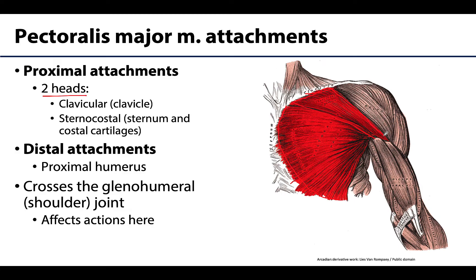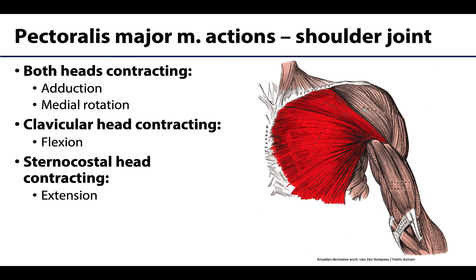Looking at these attachment points, you can see that the pectoralis major muscle will cross the glenohumeral joint. Since it crosses the glenohumeral or shoulder joint, when it contracts it can directly affect some of the actions that occur at the shoulder joint. The pectoralis major muscle can do quite a lot, but it is dependent on which part of the muscle is contracting, because the clavicular and sternocostal heads can contract simultaneously or separately.